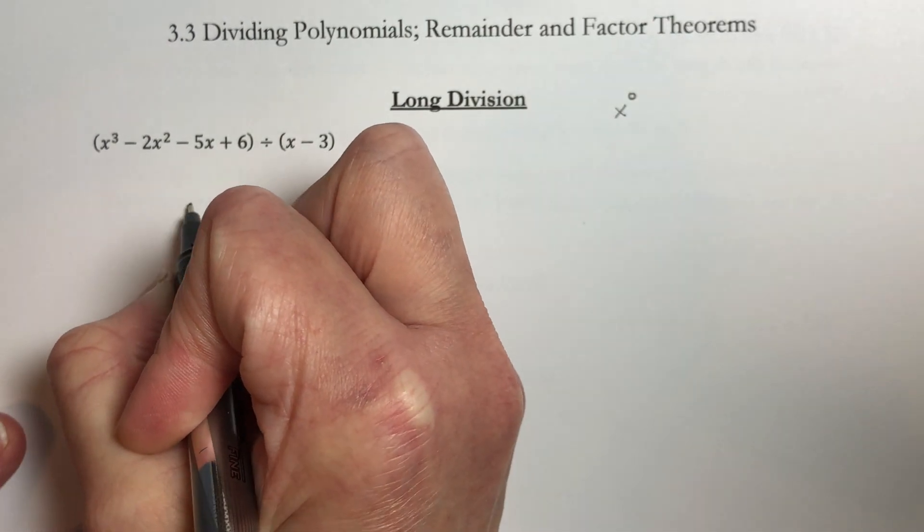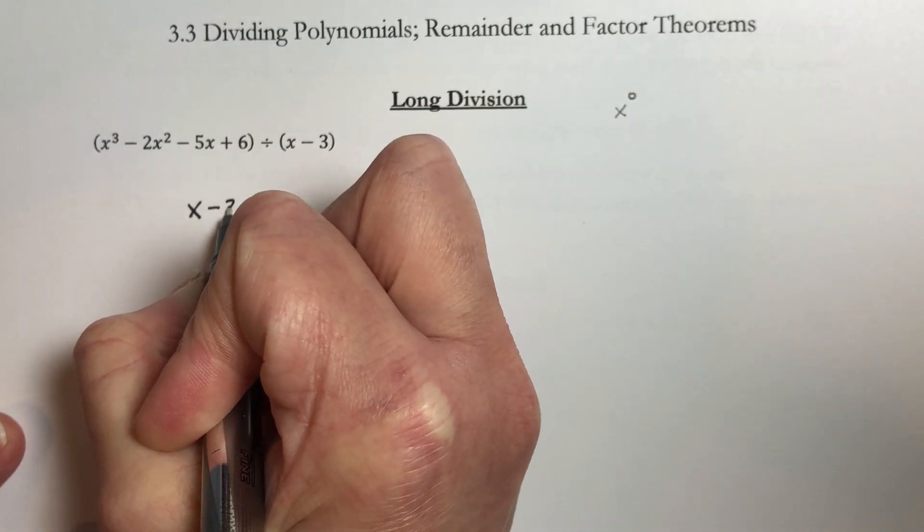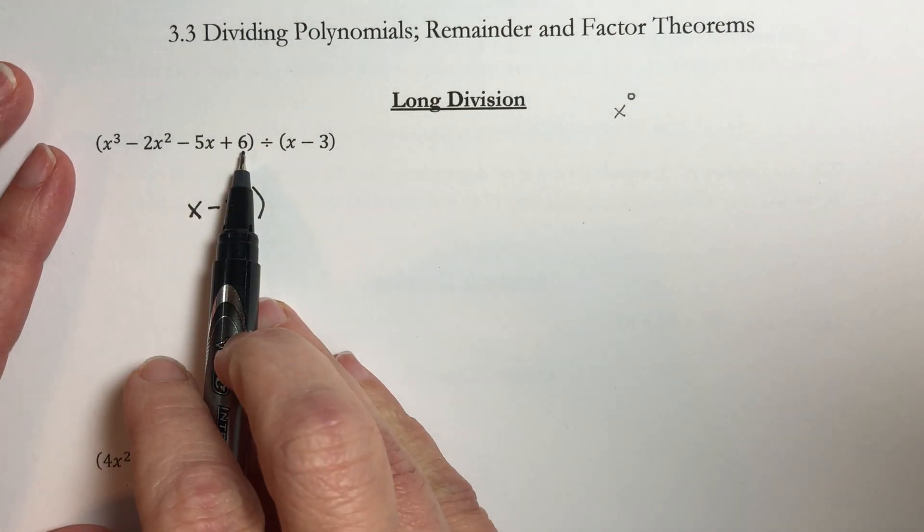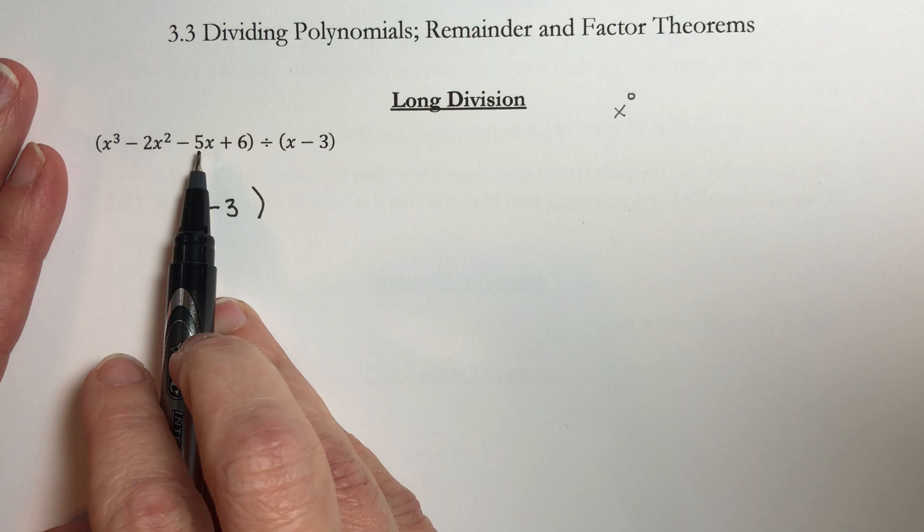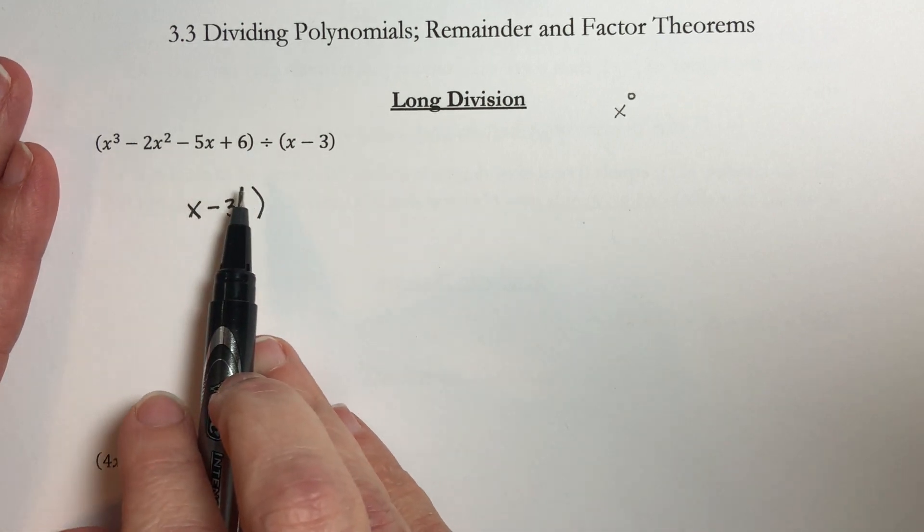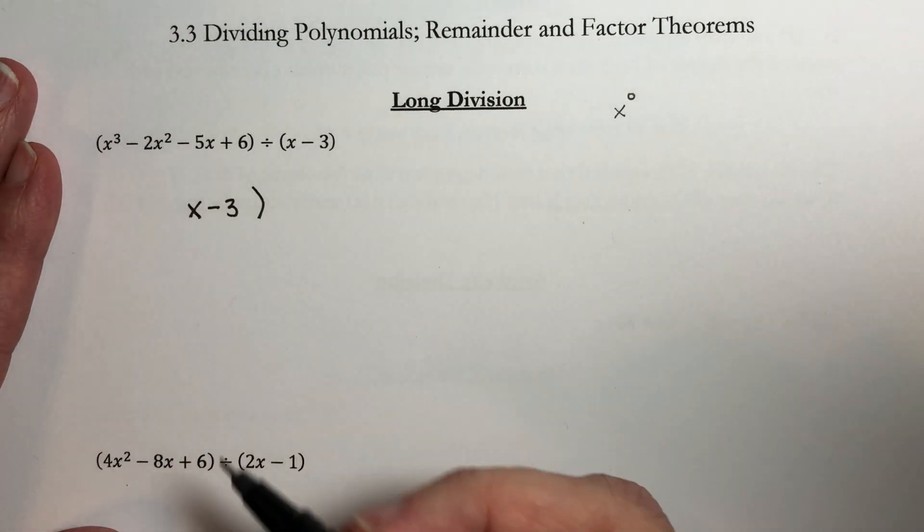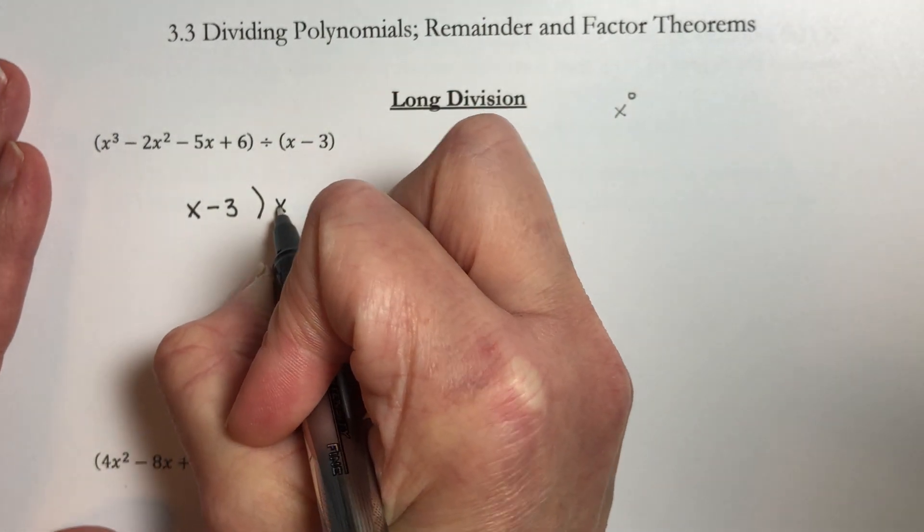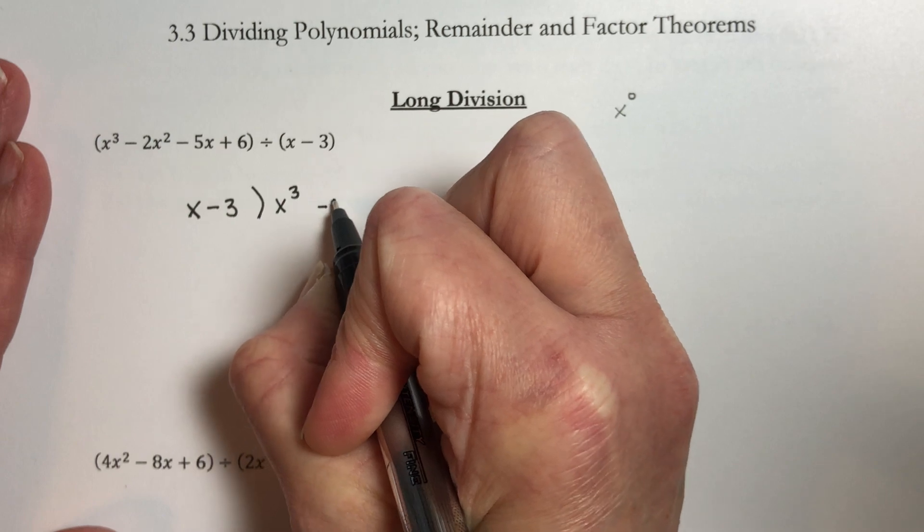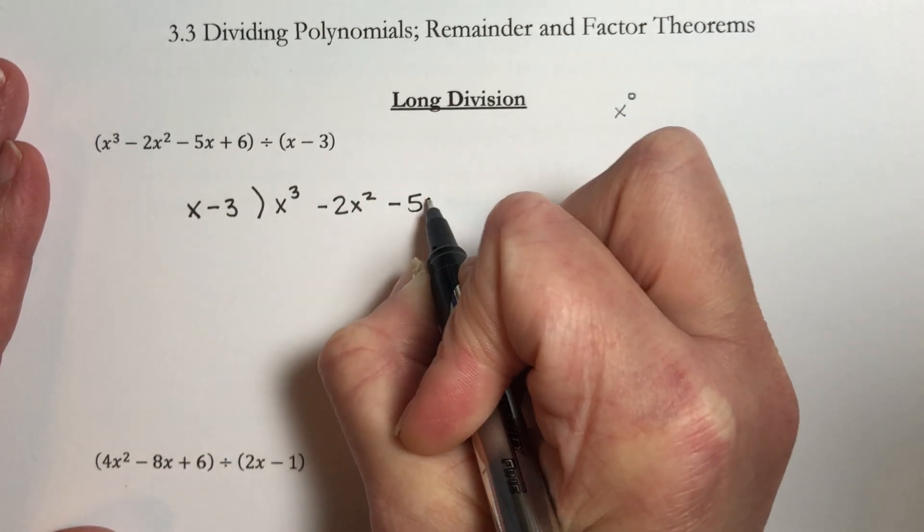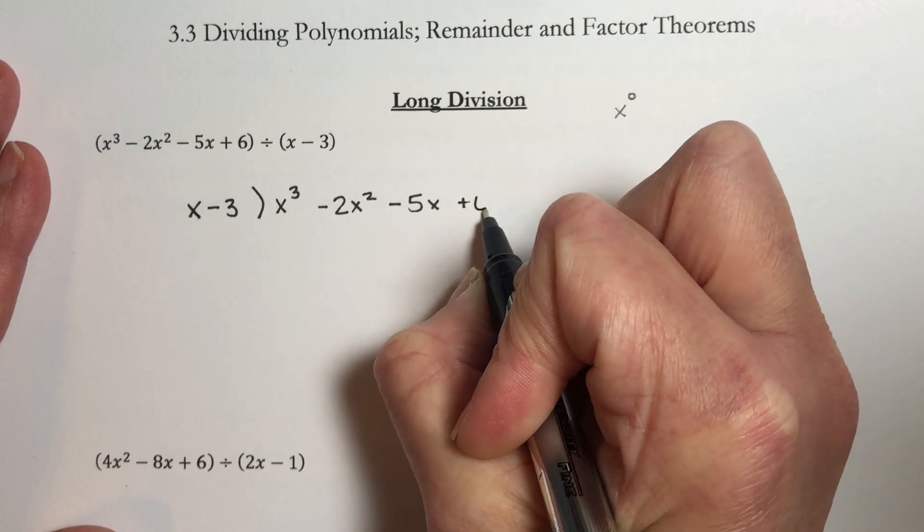So I'm going to write this so that it looks like a long division. I'm going to write x minus 3 divided into and I'm going to write down this polynomial. As a suggestion space this out a little bit more than you think you ought to so that as we're working this we don't lose things. So I have x cubed minus 2x squared minus 5x plus 6.